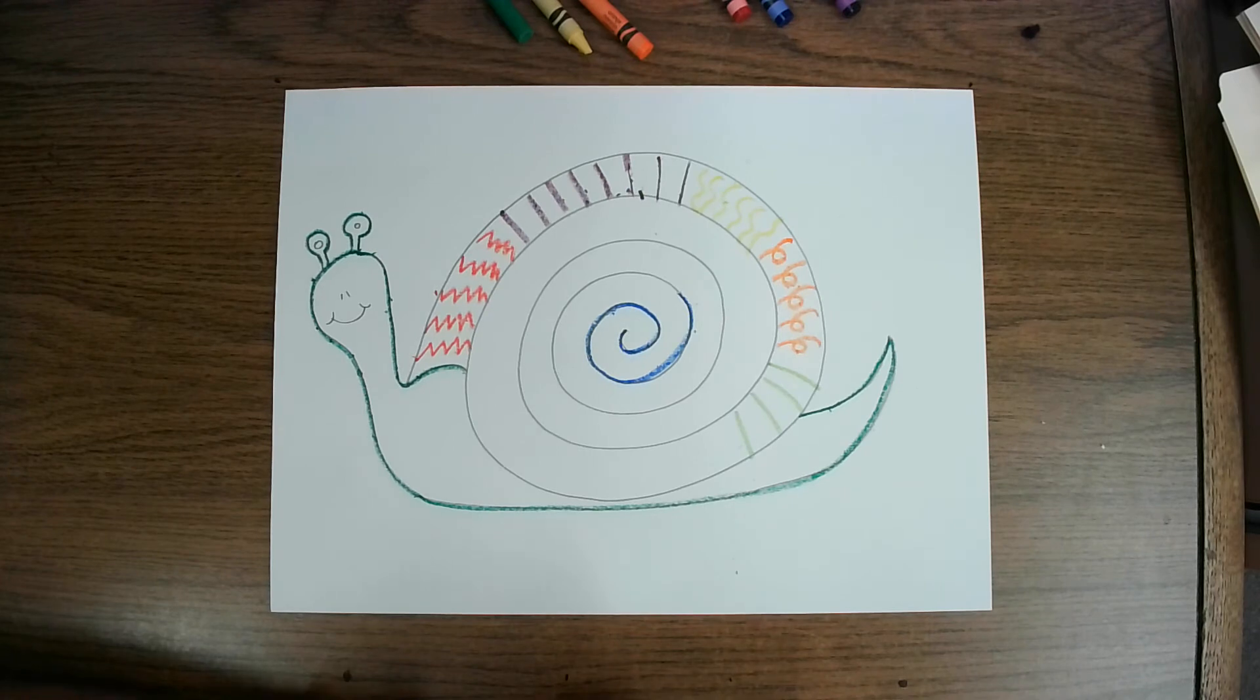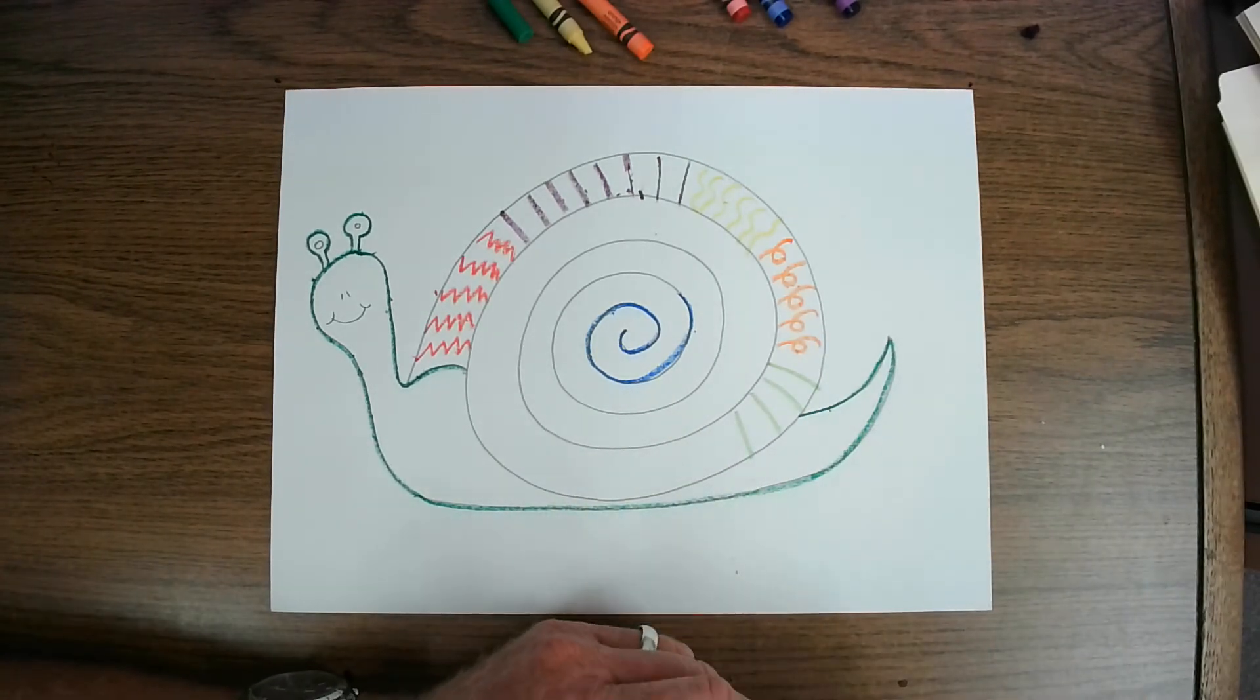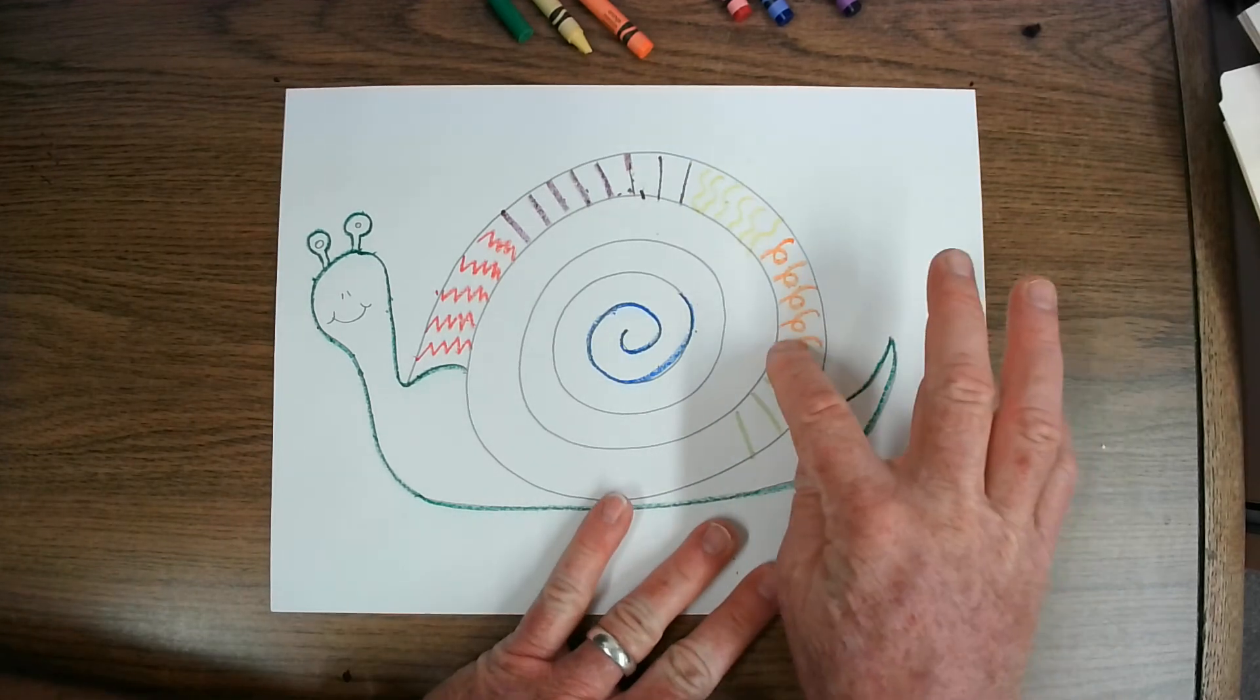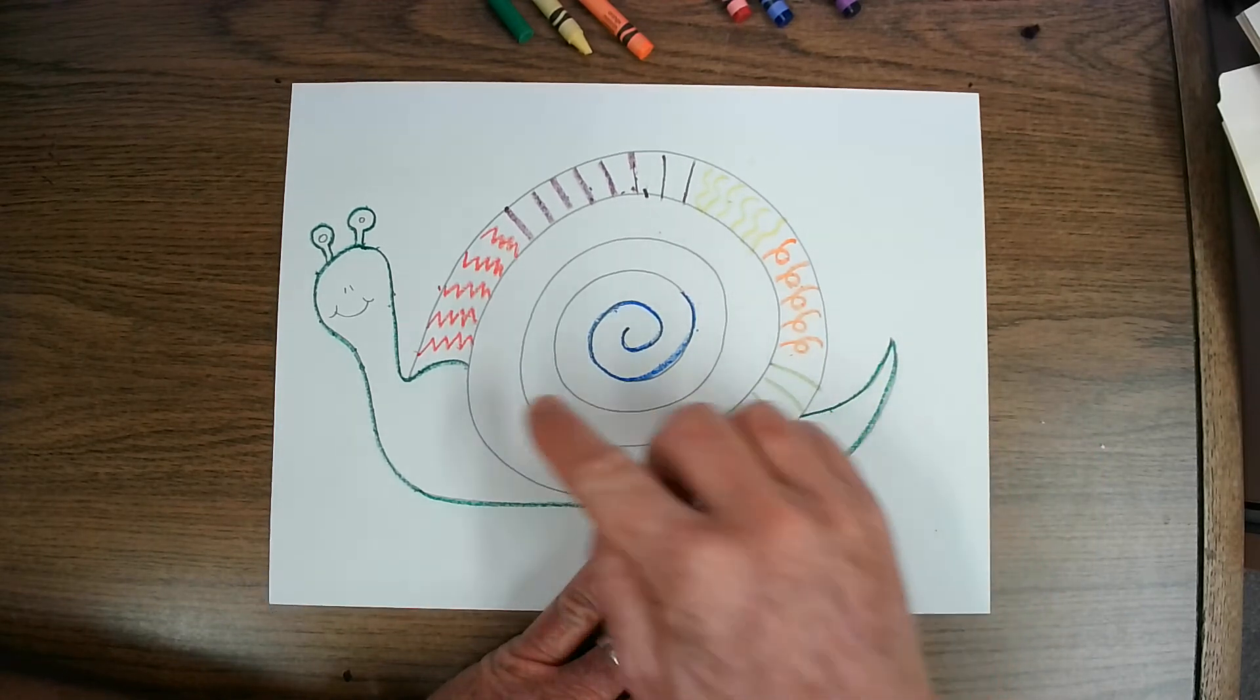Now, if you have watercolor paints at home, you are going to want to get the paints very watery. What happens when you press down hard with crayon is crayons made from wax, and wax comes from oil. And watercolor paints are mixed with water, so oil and water never mix. So if you press down hard with your crayons, the paint won't stick to the crayon, but it will stick to the paper in between.